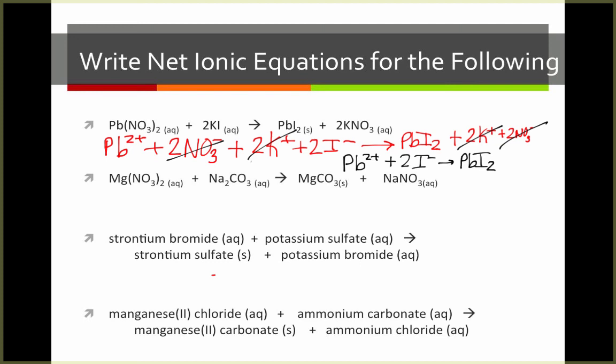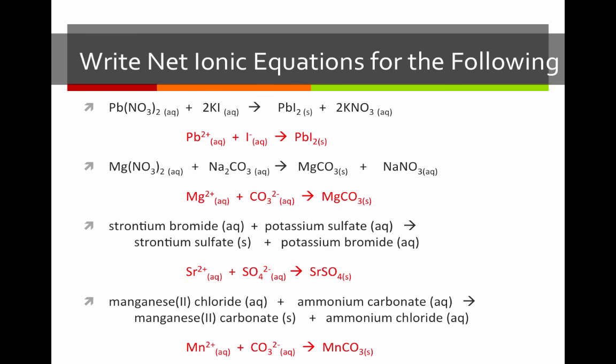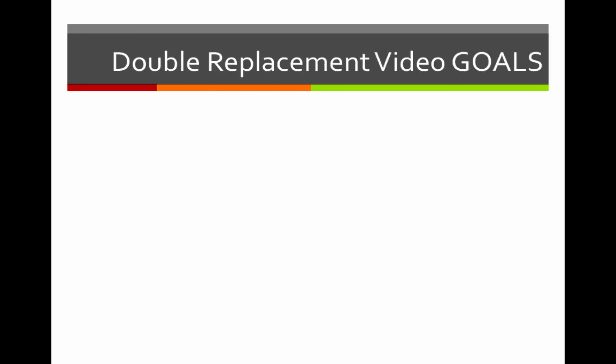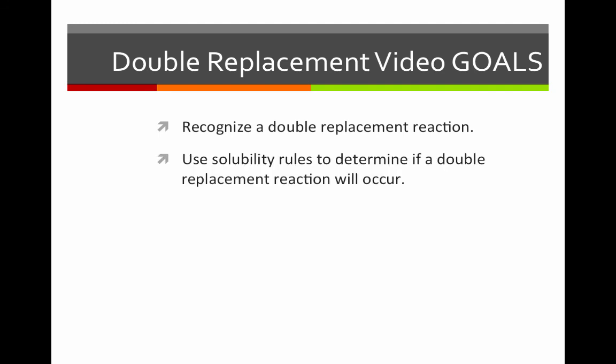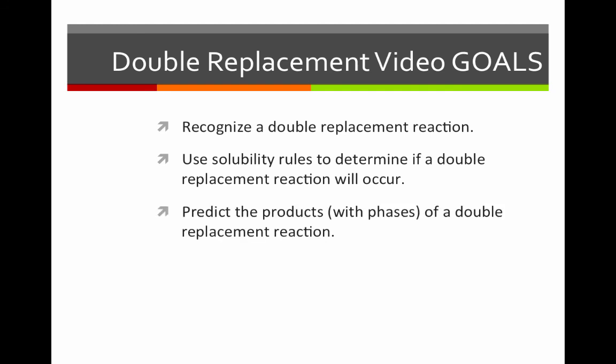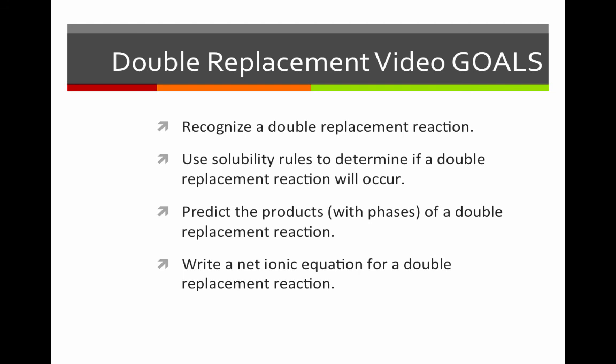Pause the video here and try the next three on your own. Welcome back — here's what you should have gotten. That brings us to the end of this video. We learned to recognize a double replacement reaction as cations switching places; used solubility rules to determine if a reaction occurs, recalling that reactions only occur when a solid product or water is formed; predicted products including phases; and wrote net ionic equations by writing all aqueous substances as their dissociated ions and eliminating any spectator ions.